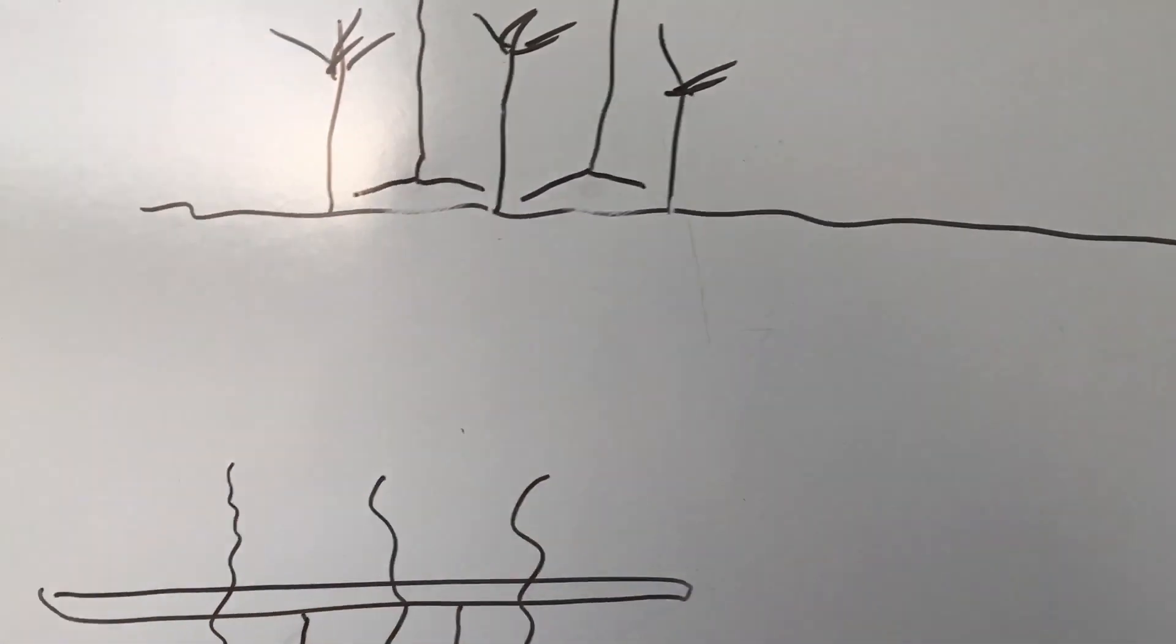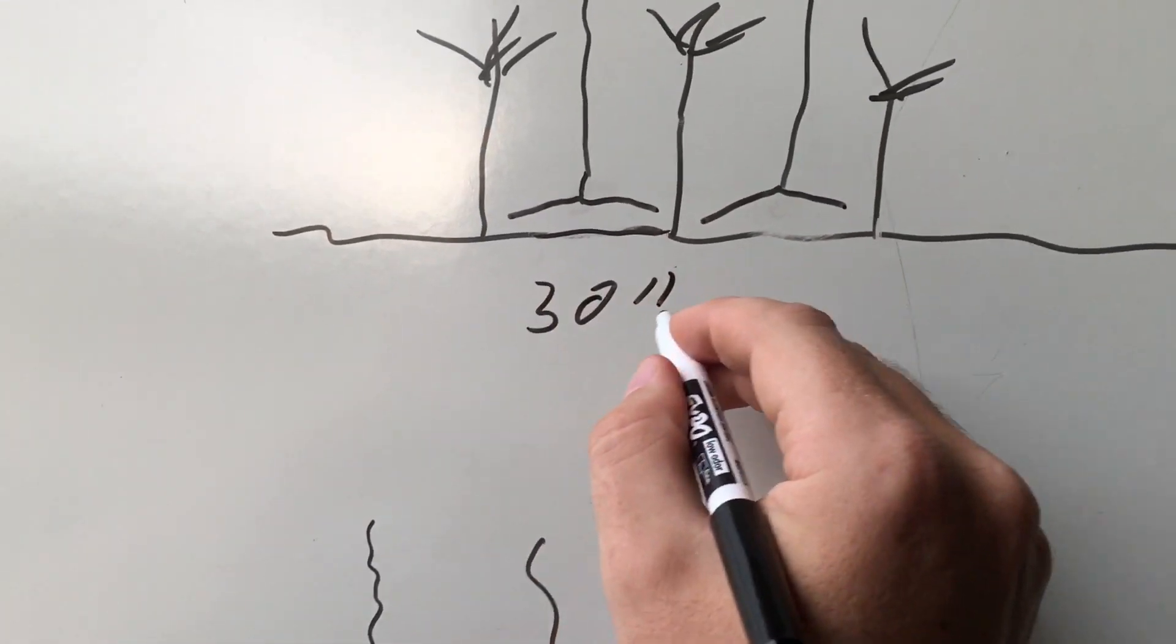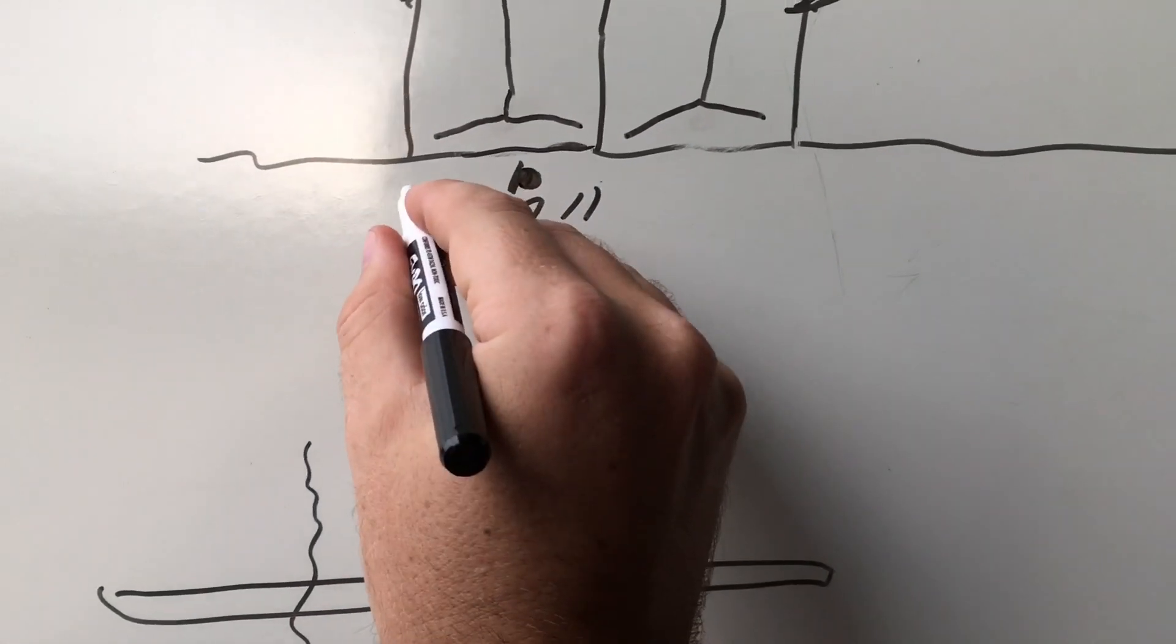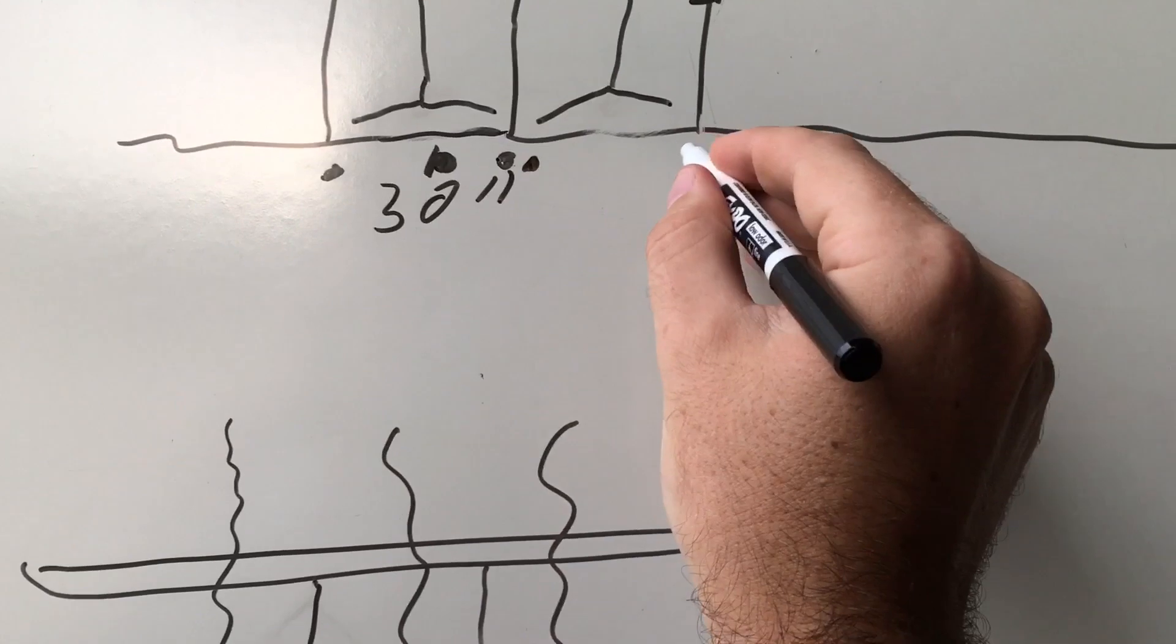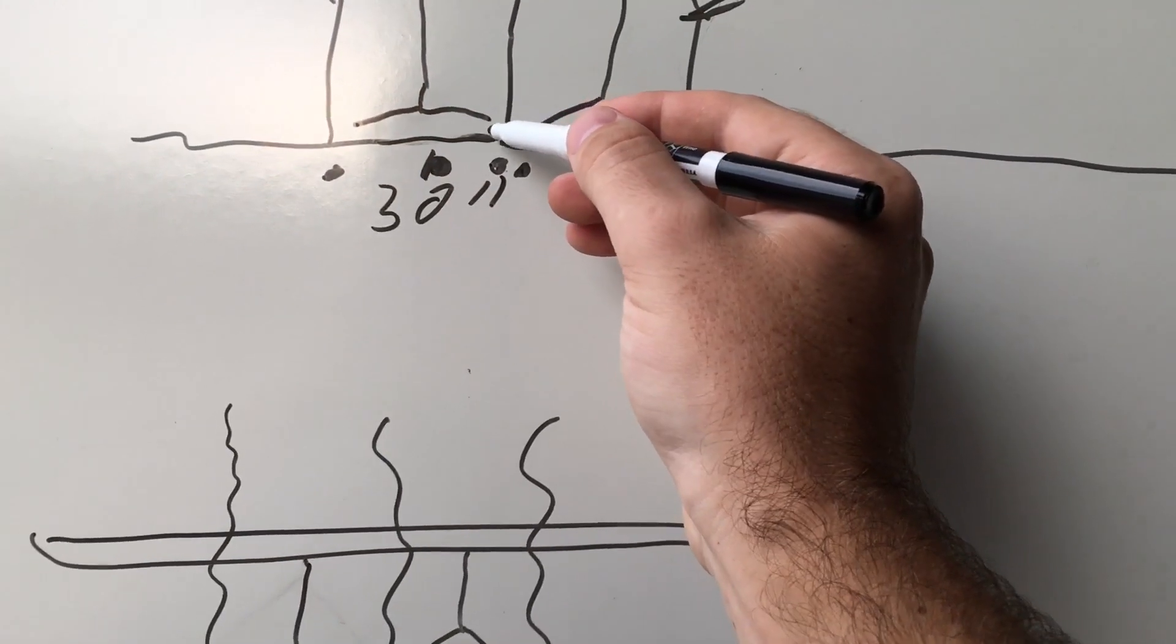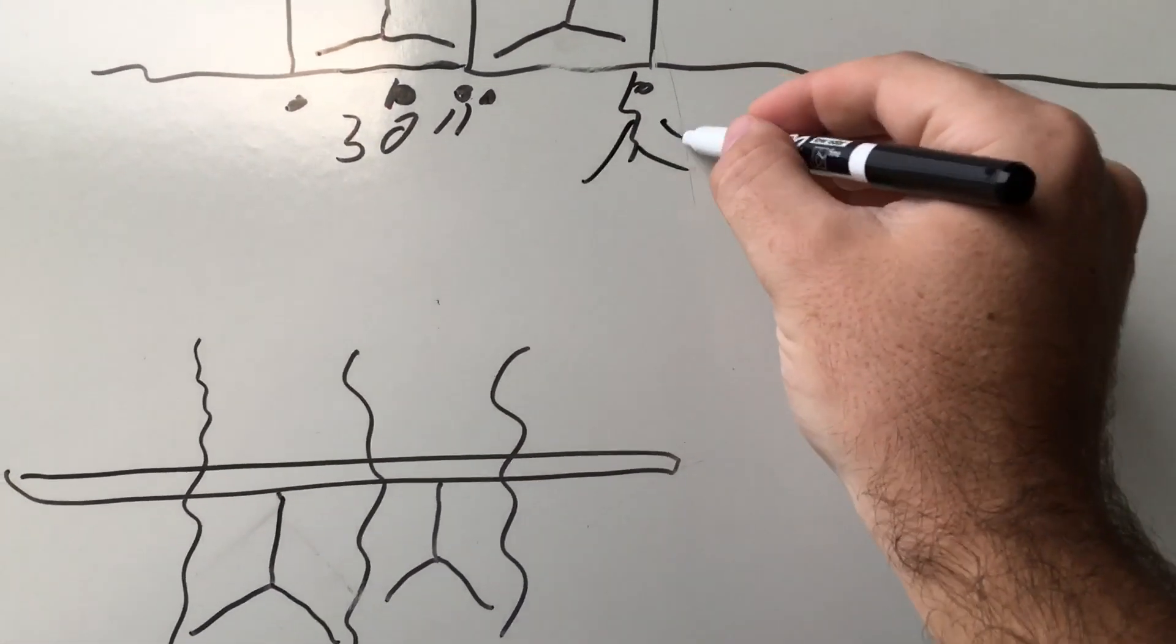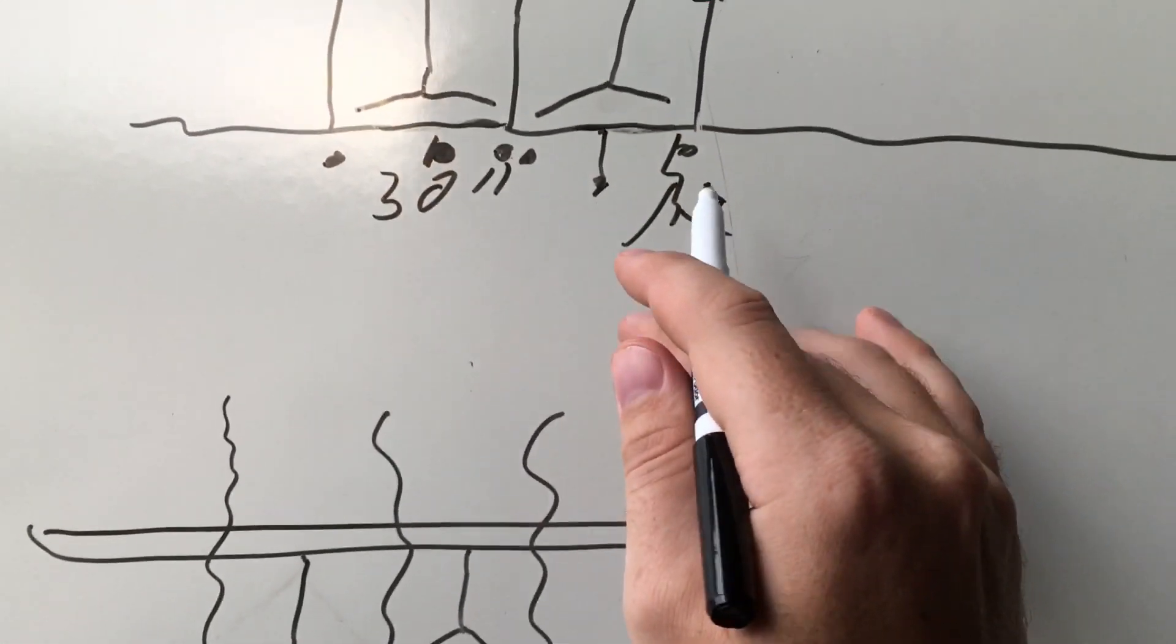Instead of putting it over a 30-inch area, this is putting the nitrogen here and here, all the way down the line. That way it's closer to the roots and the root zone. The nitrogen can funnel down where the roots are instead of in the center of 30 inches.